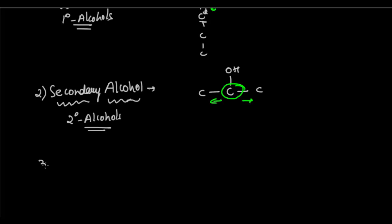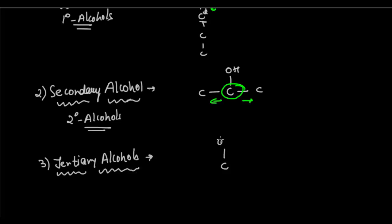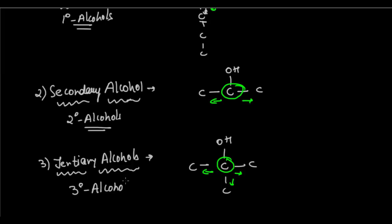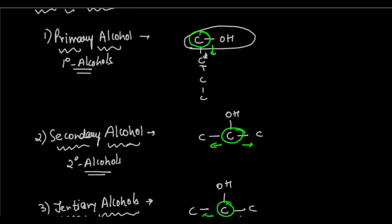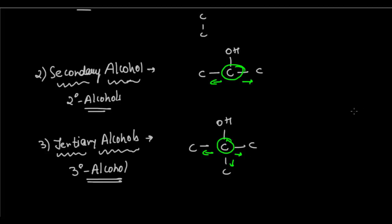Lastly, we have tertiary alcohols, where the main carbon to which the OH group is attached is attached to three other carbon atoms. Tertiary alcohol is also called a third degree alcohol. So: primary — one carbon attached; secondary — two carbons attached; tertiary — three carbons attached.